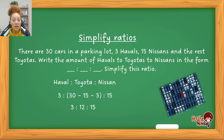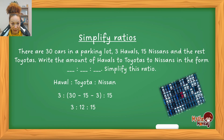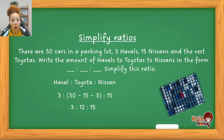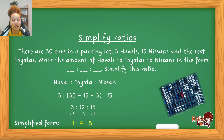Now the question asks you to simplify this ratio. That means making sure none of the values are divisible by the same number. Looking at 3 : 12 : 15, I can divide all values by 3 to get whole numbers. If no single value can divide all others to give a whole number, the ratio is already simplified. Here, dividing by 3 gives the simplified form: 1 : 4 : 5.